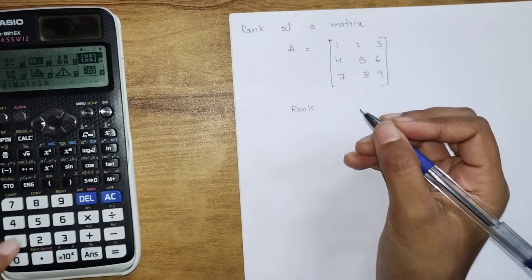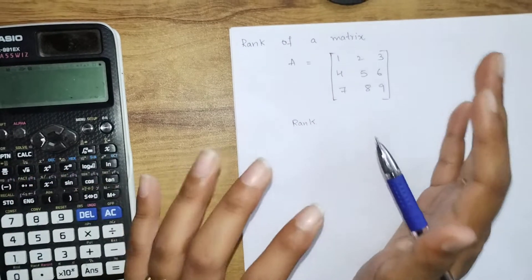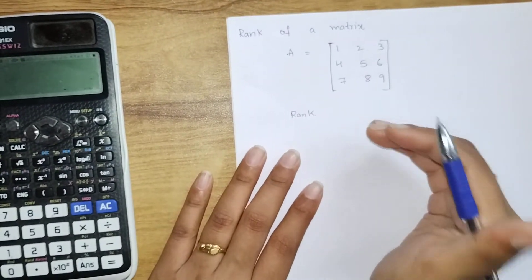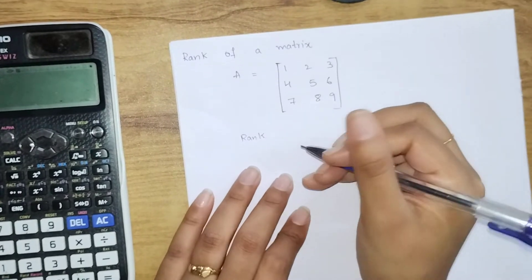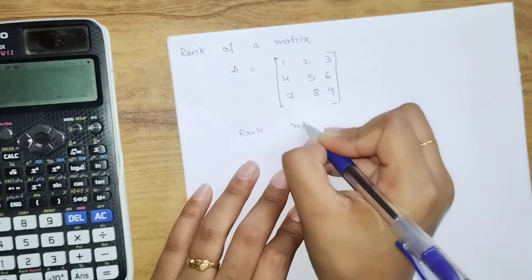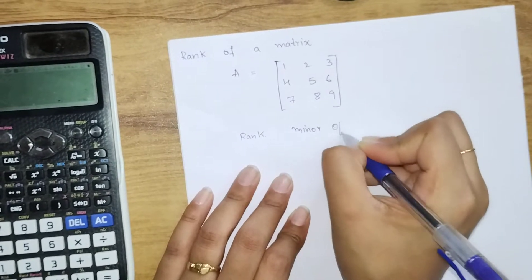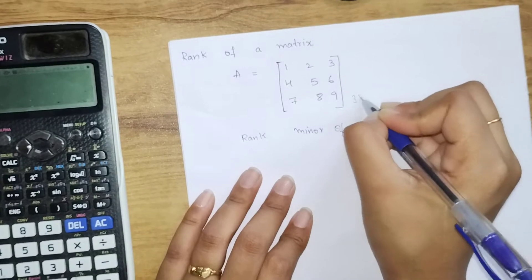Hello guys, welcome back to my channel. Today we are going to discuss how to find the rank of a matrix. This is an example that I have taken. To find the rank of a matrix, we need to find the minor of the given matrix. This is a 3 by 3 matrix, so the order is 3.